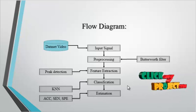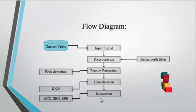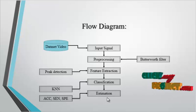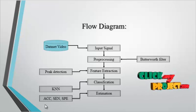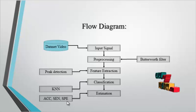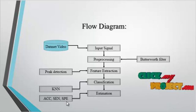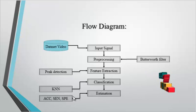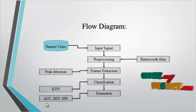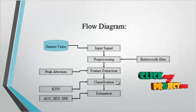After classification, estimation is carried out. The estimation parameters like accuracy, sensitivity, and specificity are calculated and displayed. These three estimations justify whether the process is efficient or not.